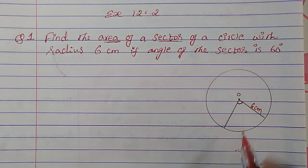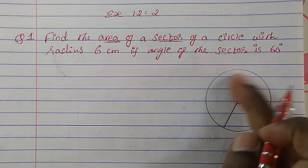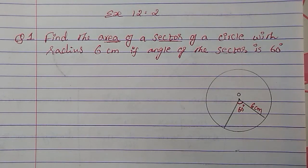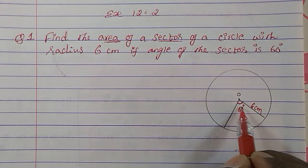If angle of the sector is 60 degrees, that means it should be the smaller angle only, not the bigger angle. So 60 degrees is given—the angle of the sector is 60 degrees.